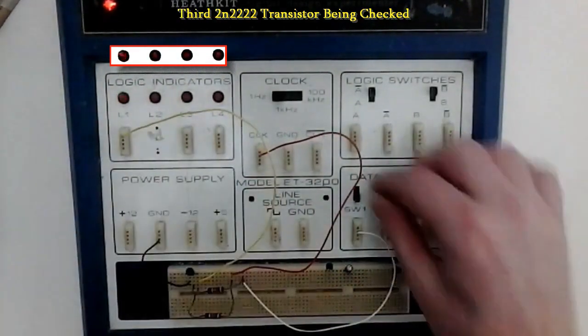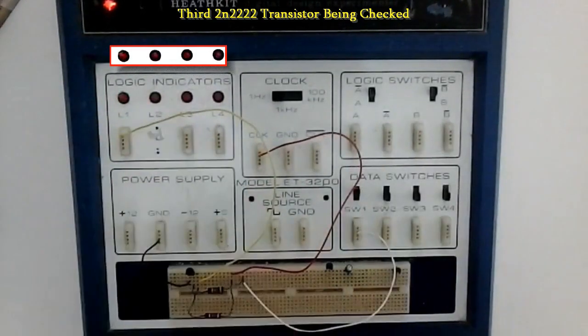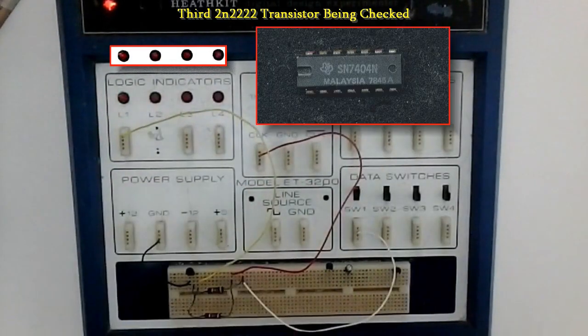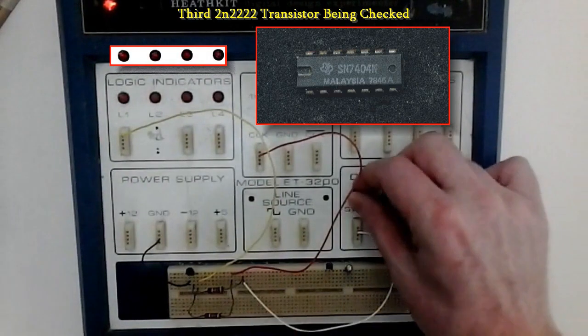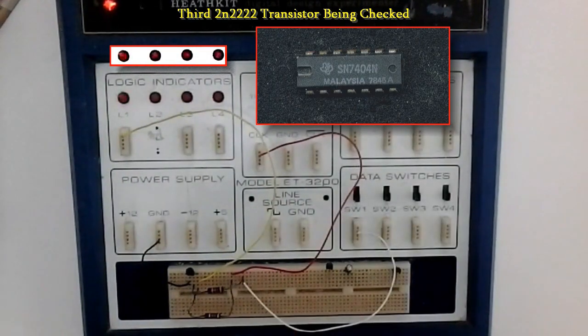By the way, if you want to use this circuit but with non-inverting switching, you might want to use one of these 7404 hex inverter chips to invert the control voltage.